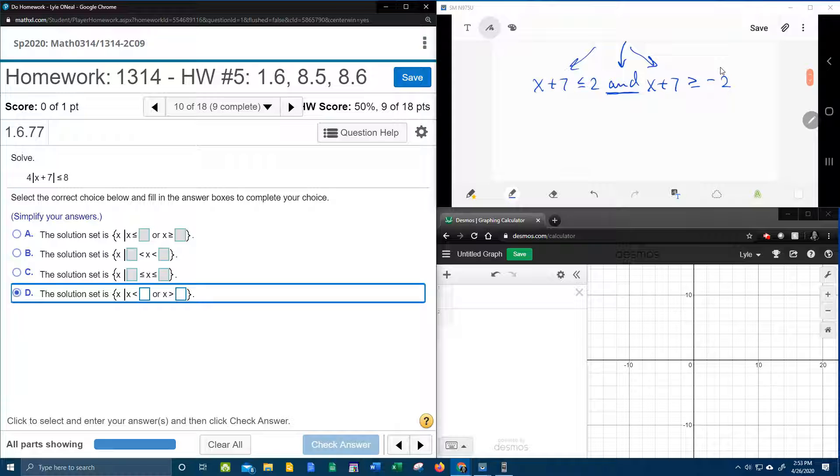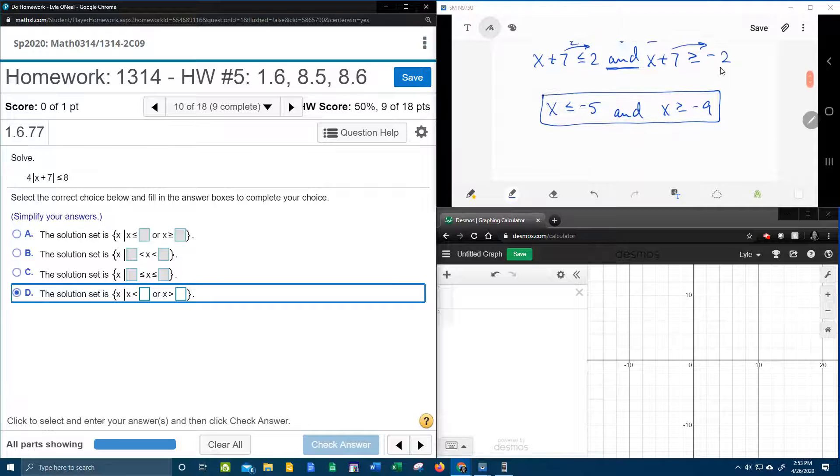All right, so now let's solve for x. Bringing the plus 7 over is going to make that minus 7. 2 minus 7 is negative 5. And bringing the 7 over again makes that negative 7. Negative 2 minus 7 is negative 9. So here is the solution.